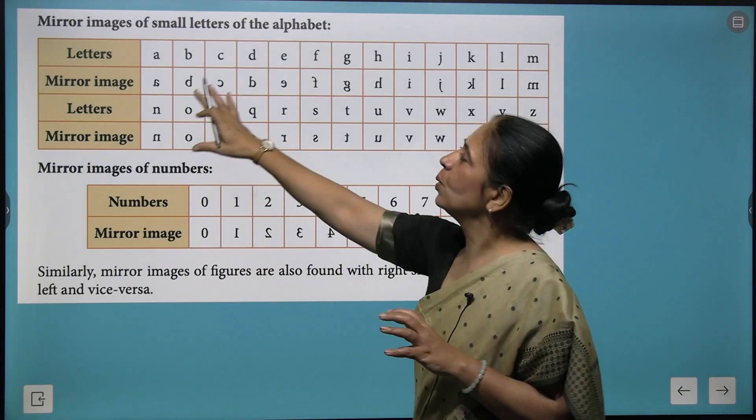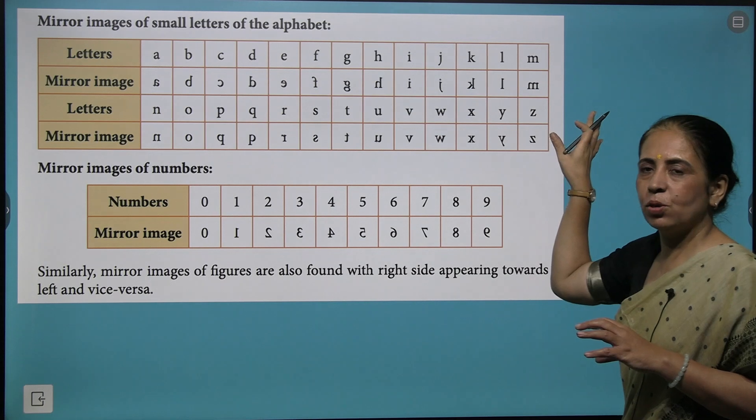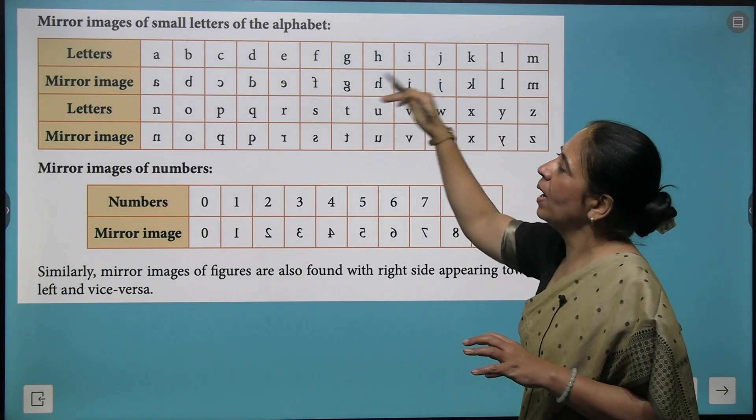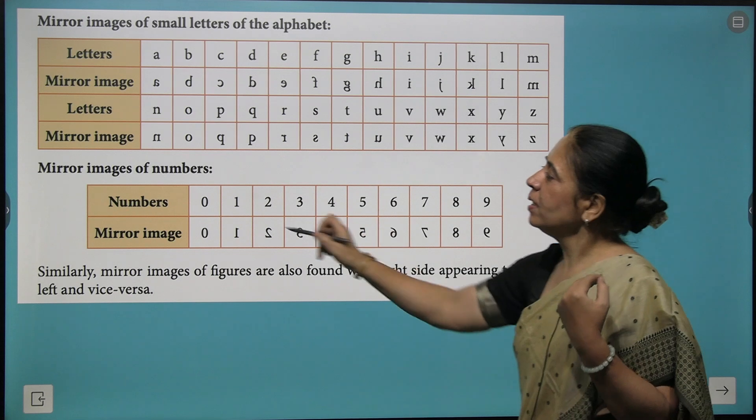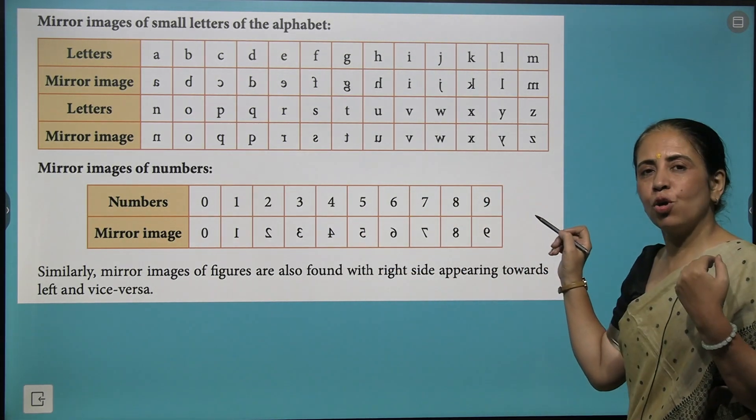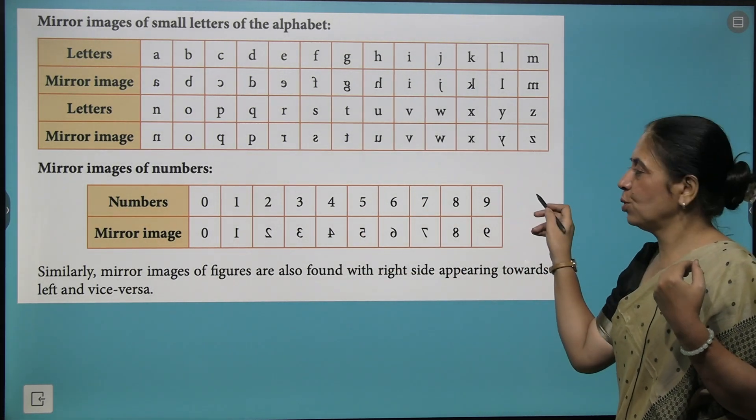Now the same thing you could see with the lowercase alphabets also that how they are formed when we take their mirror images.